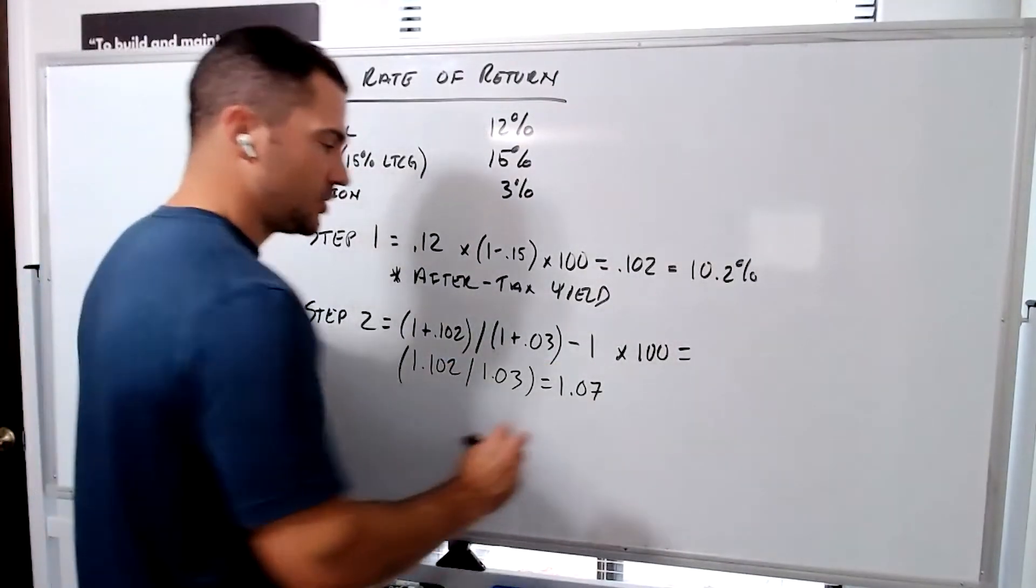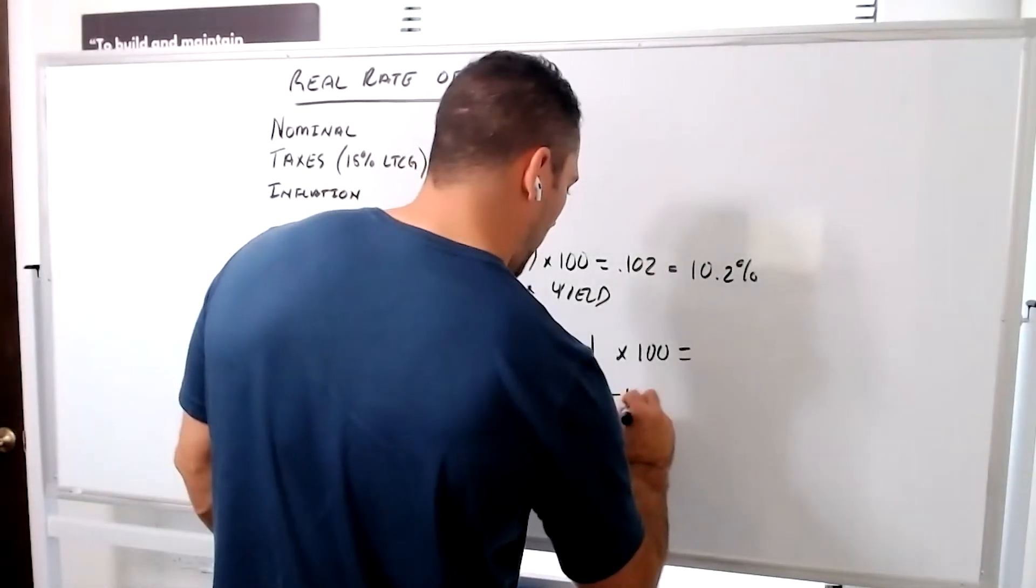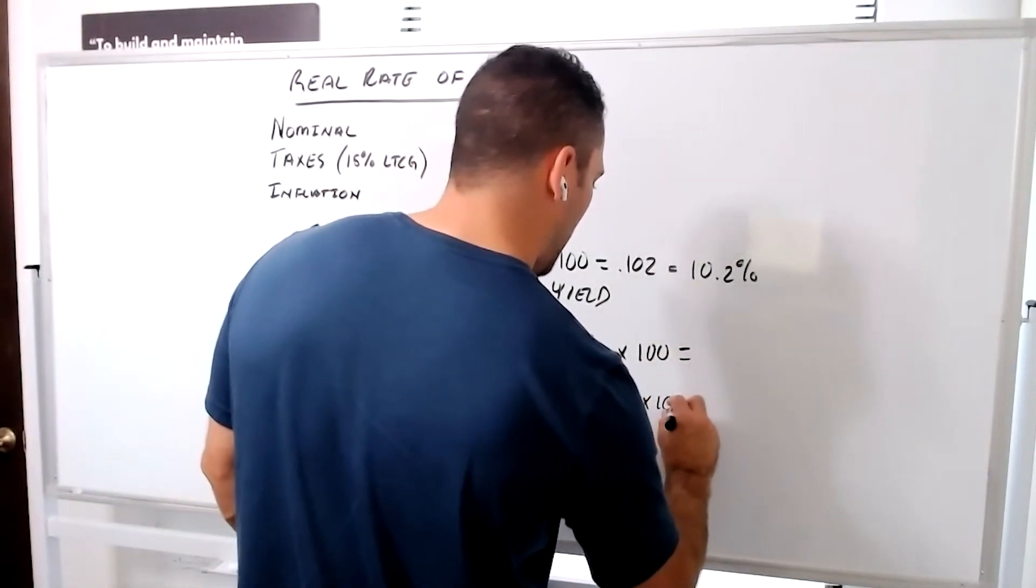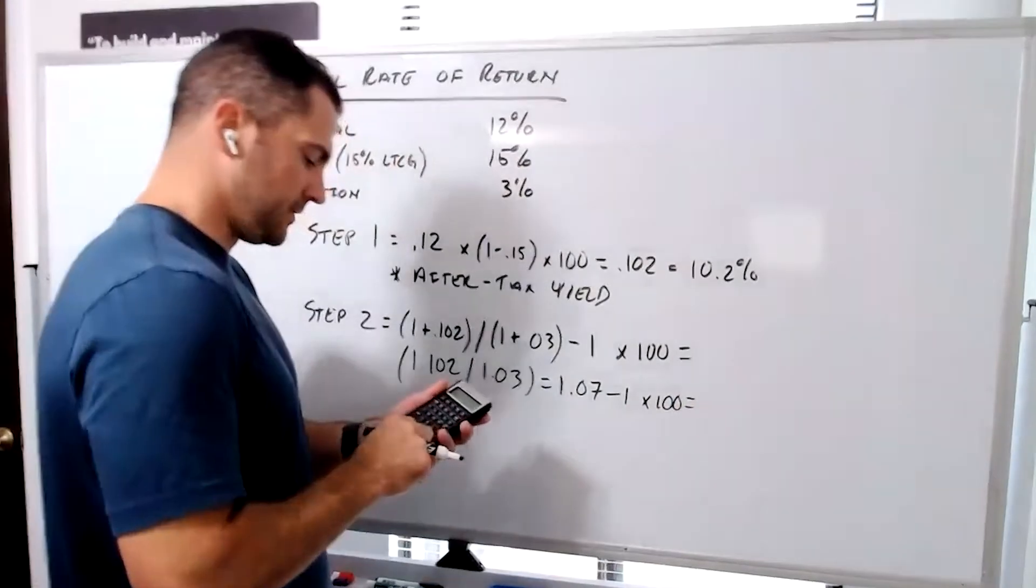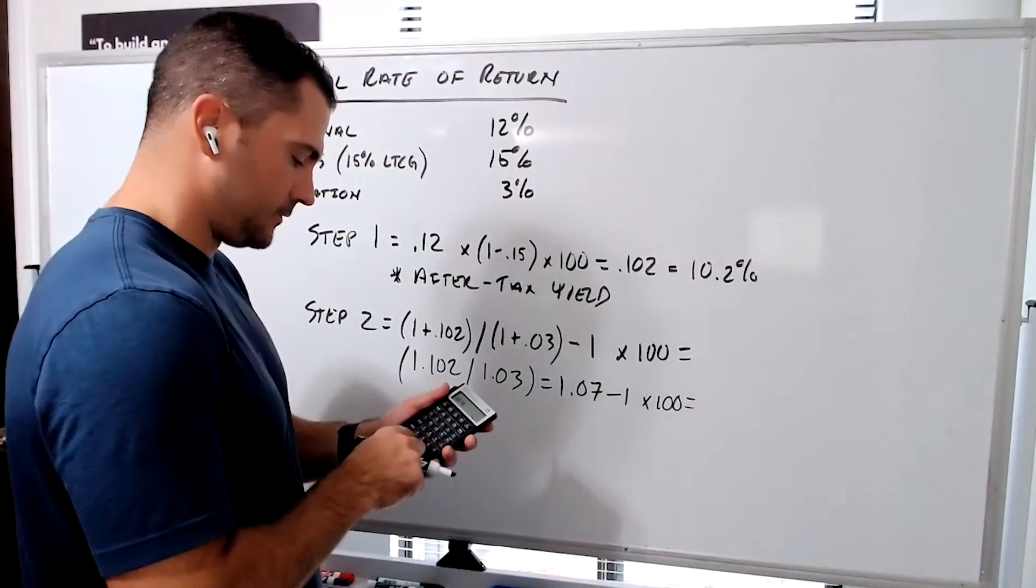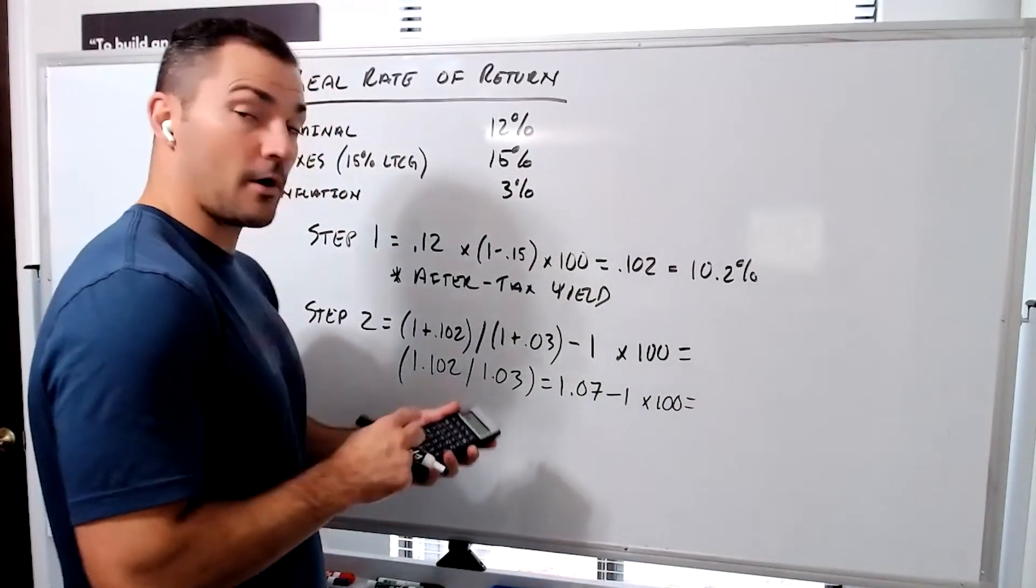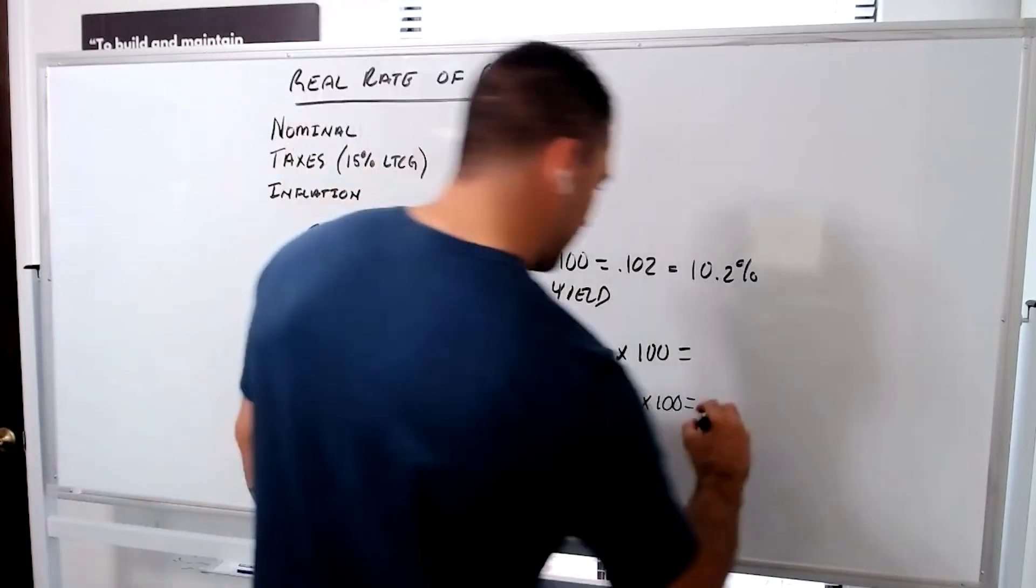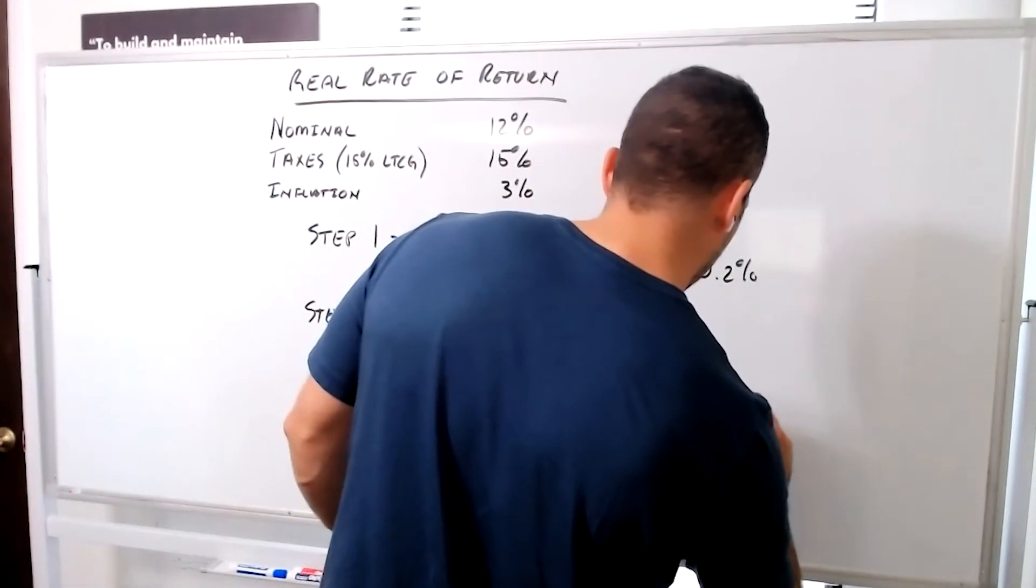But to turn this into a percentage, we subtract 1 and then multiply it by 100. 1.07 minus 1 times 100. You can probably already guess the answer. This says 6.99%.